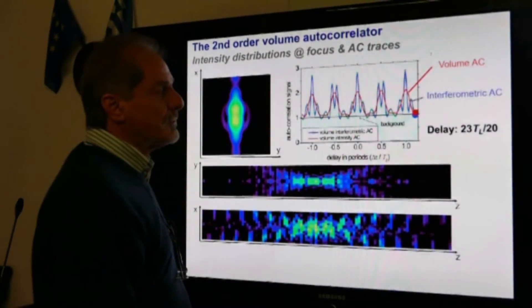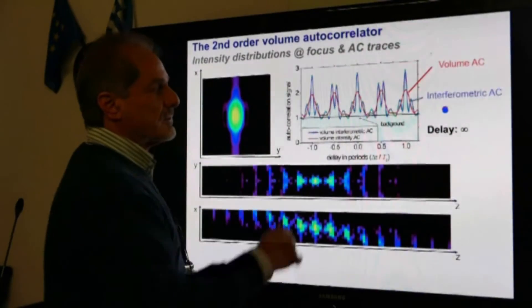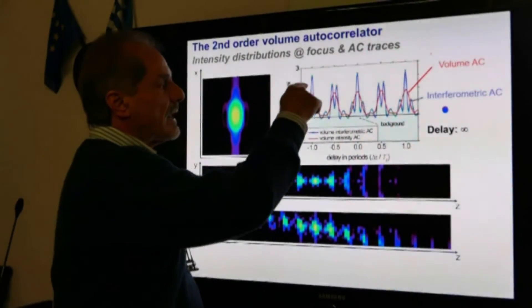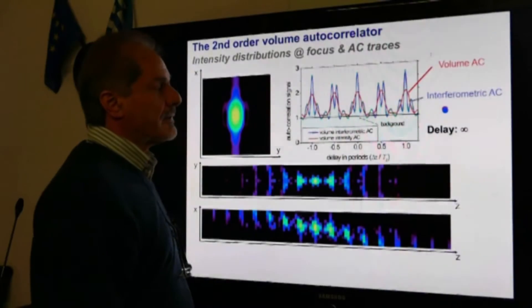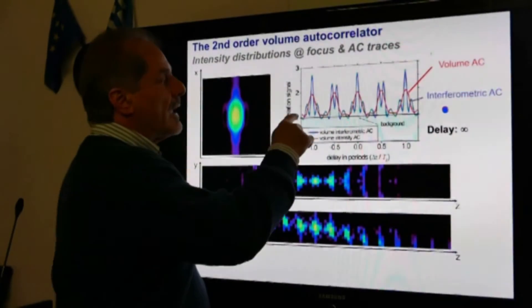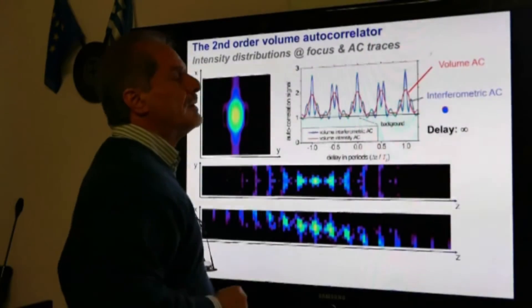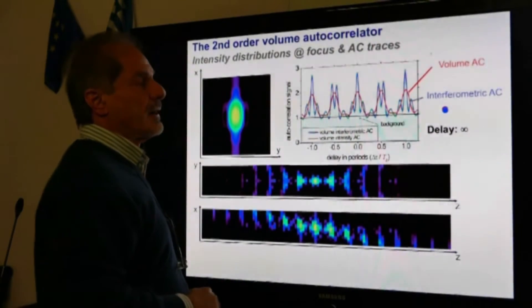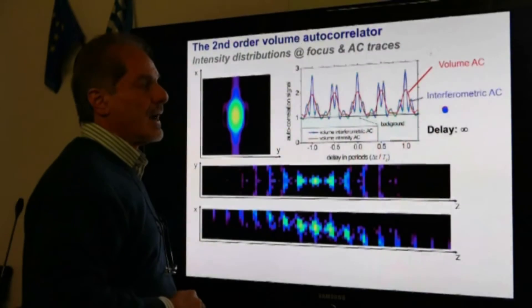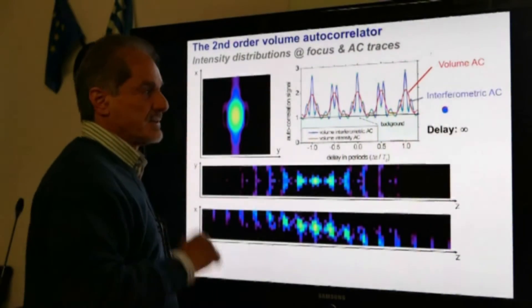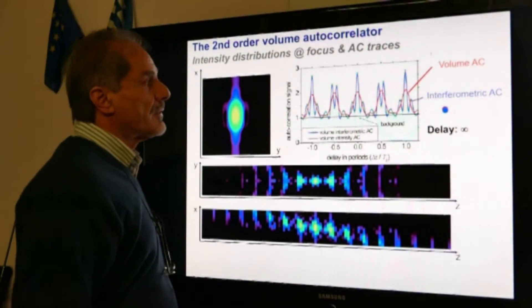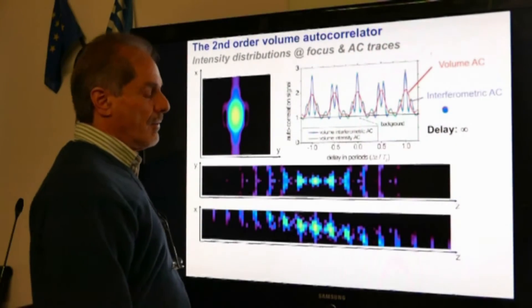In red here is shown the cycle average spectrum for the case that the temporal resolution that we have is not enough to resolve the interferometric trace. The red curve is the volume second-order autocorrelation trace of attosecond pulse trains measured through two-photon ionization of helium.